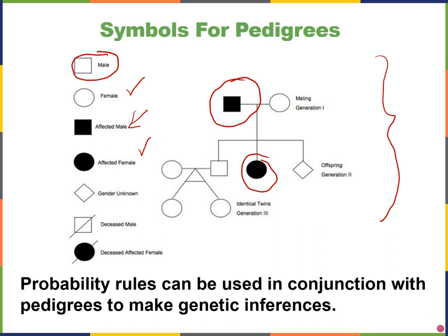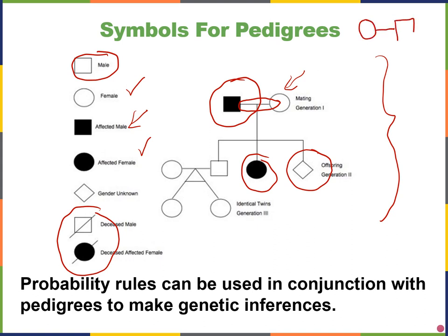If you do not know the sex of the child, we use a diamond. If someone is deceased, we would put a slash through that person. Anyone who does not have the trait of interest is not shaded in. The lines connecting two shapes show who is mating — those lines connect two mates together, connecting the circle and the square.